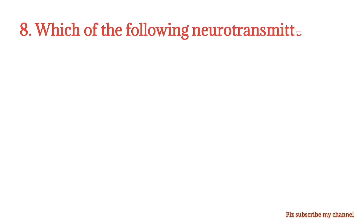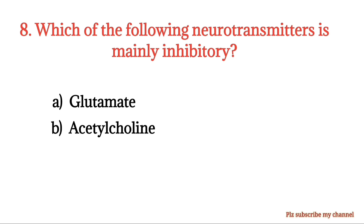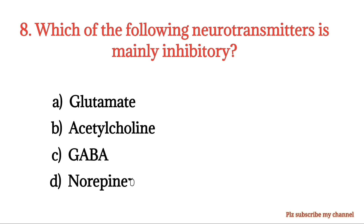MCQ number 8. Which of the following neurotransmitters is mainly inhibitory? Option A: Glutamate. Option B: Acetylcholine. Option C: GABA. Option D: Norepinephrine. The right option is Option C.